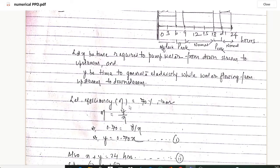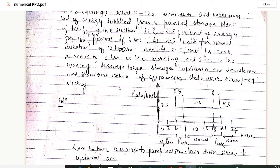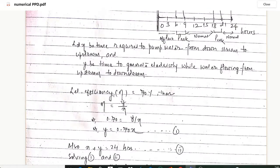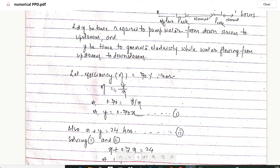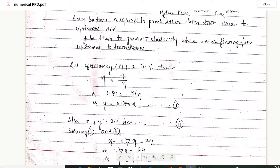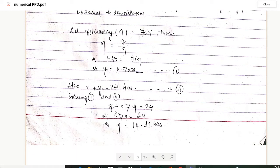Let X be the time required to pump water from downstream to upstream, and Y be the time to generate electricity while water falls from upstream to downstream. Assuming standard efficiency of 70%, efficiency equals Y divided by X, so 0.7 = Y/X, giving Y = 0.7X. This is equation 1. Also, X plus Y equals 24 hours. Solving equations 1 and 2, we get X = 14.11 hours.